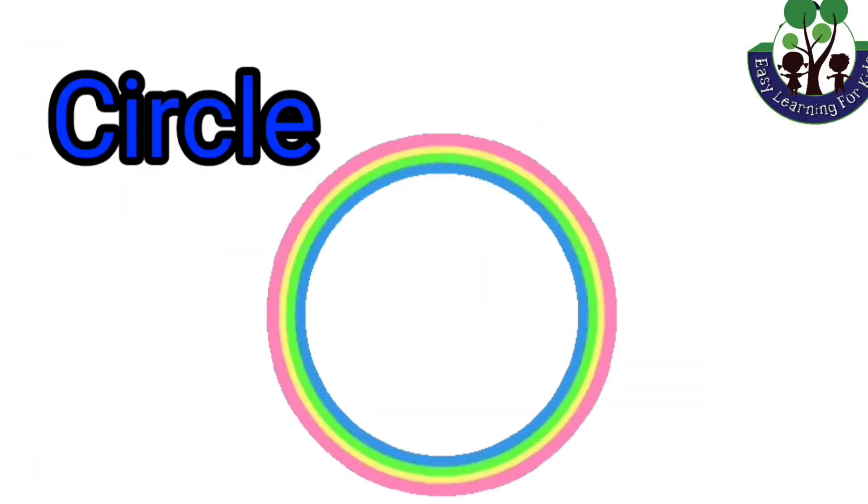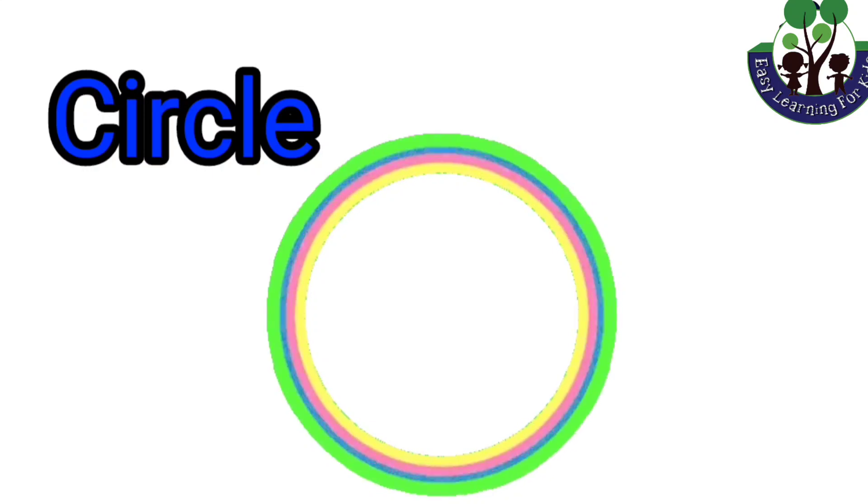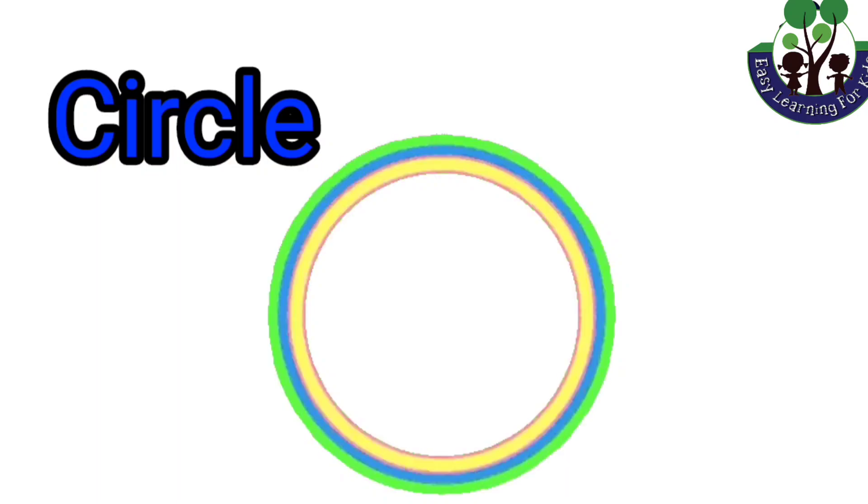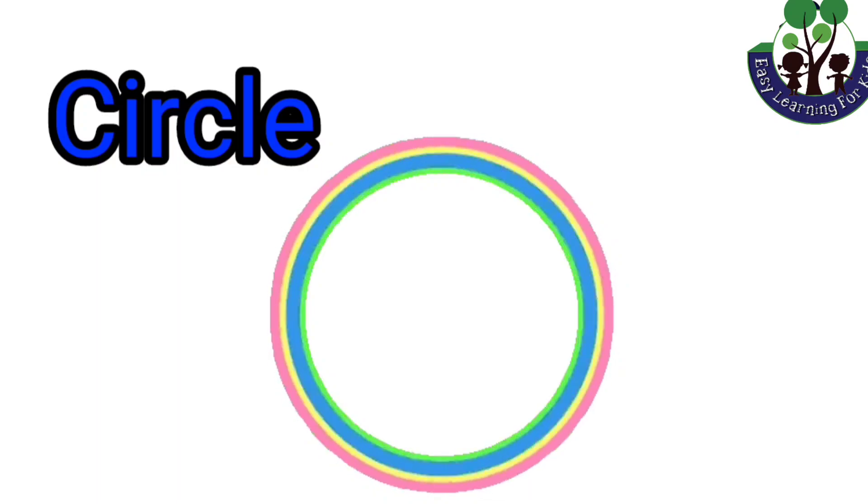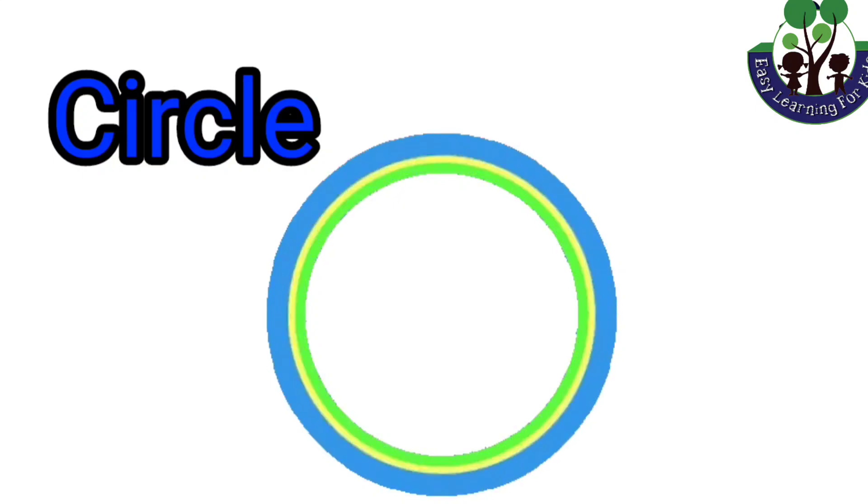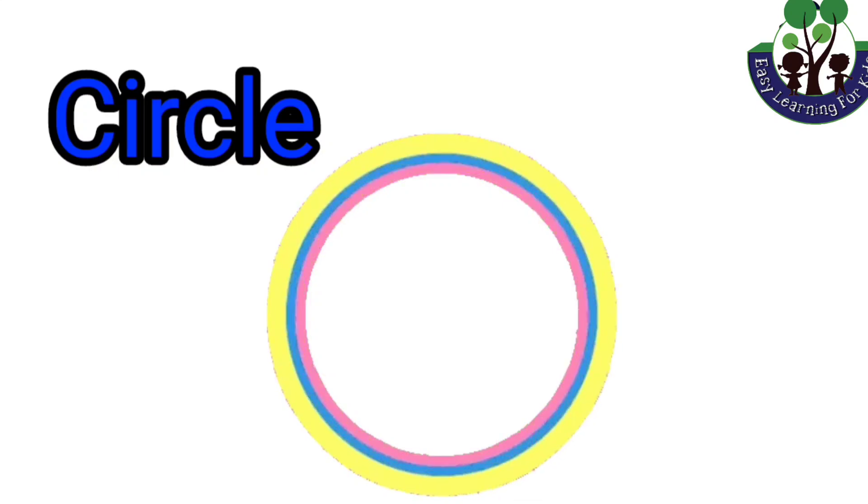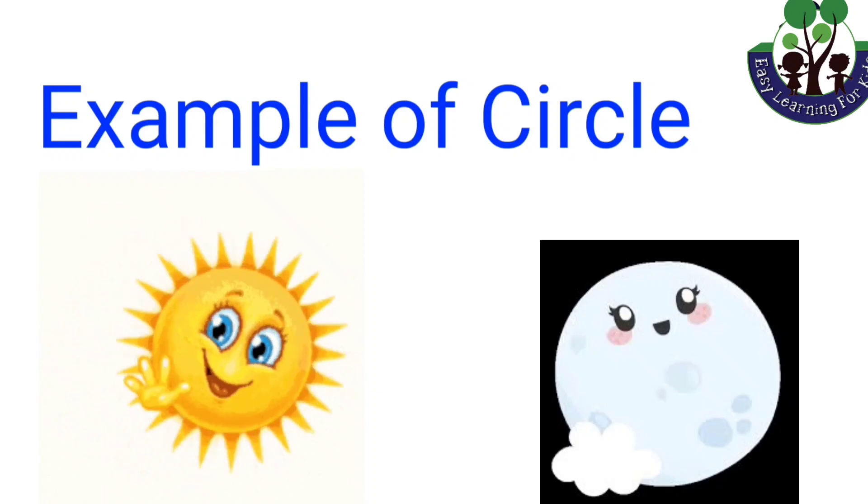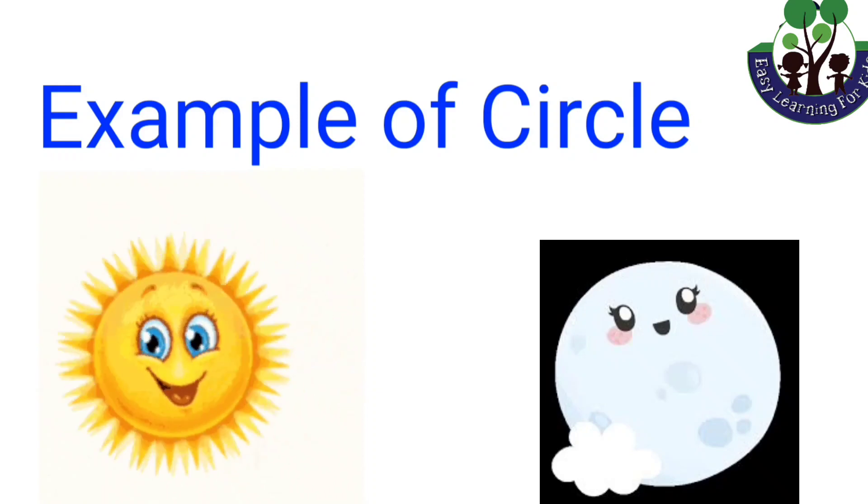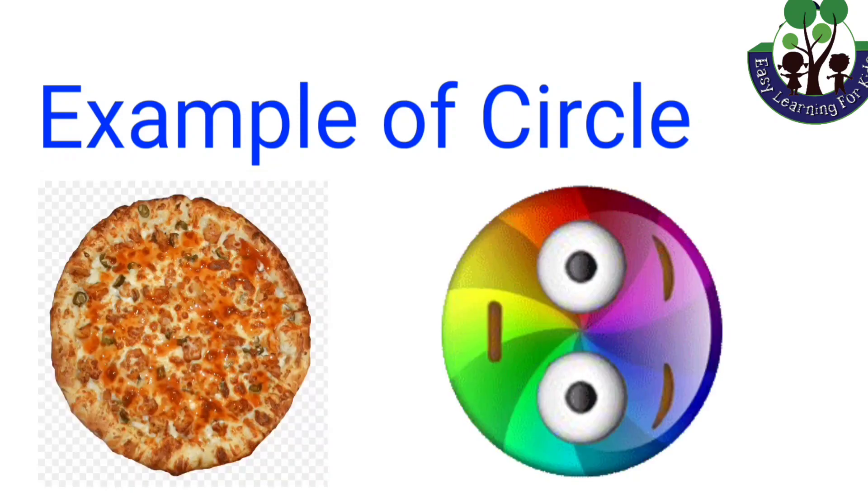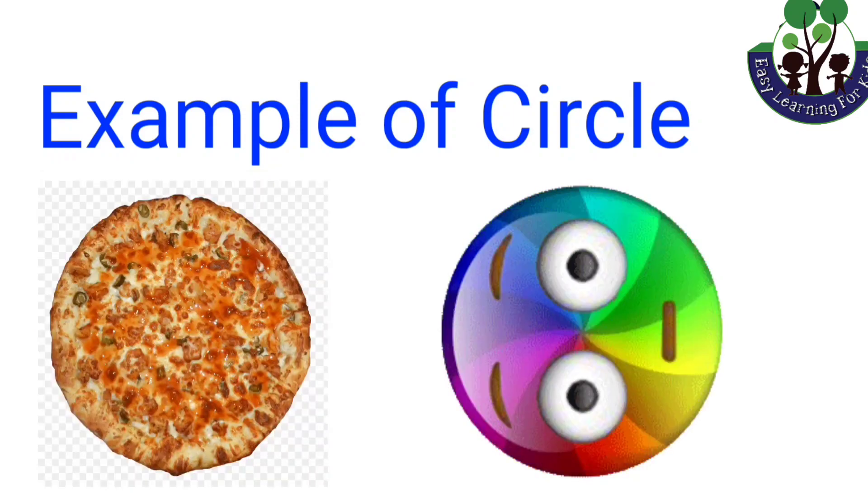Circle. A circle is a closed shape. It is categorized as a two-dimensional geometric shape that is round in structure. It does not have any lines or corners. For example, sun, moon, pizza base, wheel, dartboard, and clock.